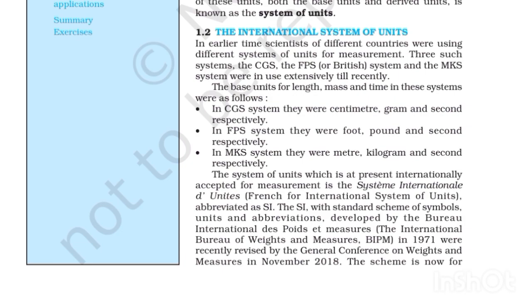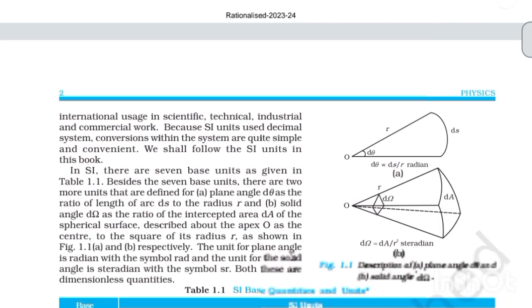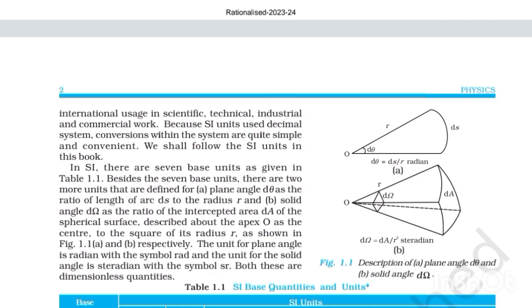The SI, with standard scheme of symbols, units and abbreviations developed by the Bureau International des Poids et Mesures, or the International Bureau of Weights and Measures (BIPM) in 1971, was recently revised by the General Conference on Weights and Measures in November 2018. The scheme is now for international usage in scientific, technical, industrial and commercial work. Because SI units use the decimal system, conversions within the system are quite simple and convenient.